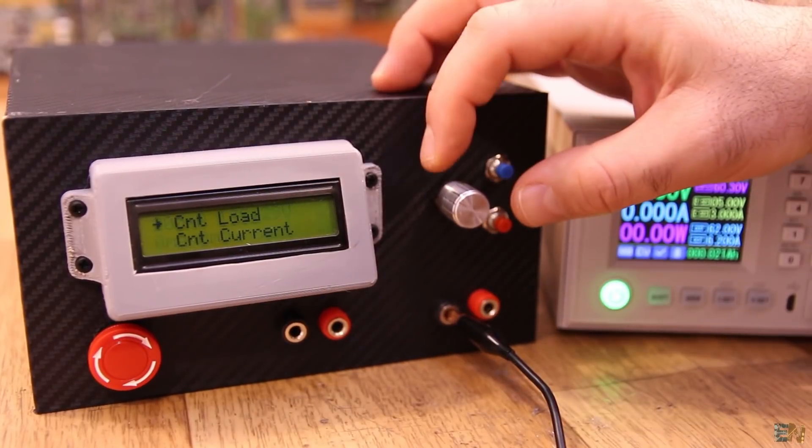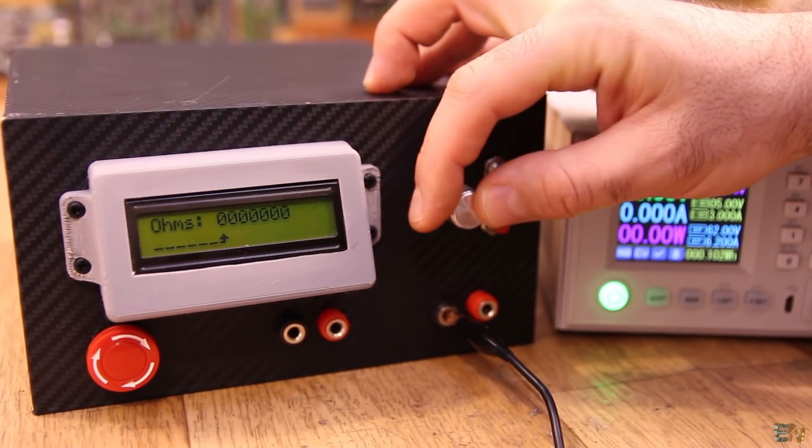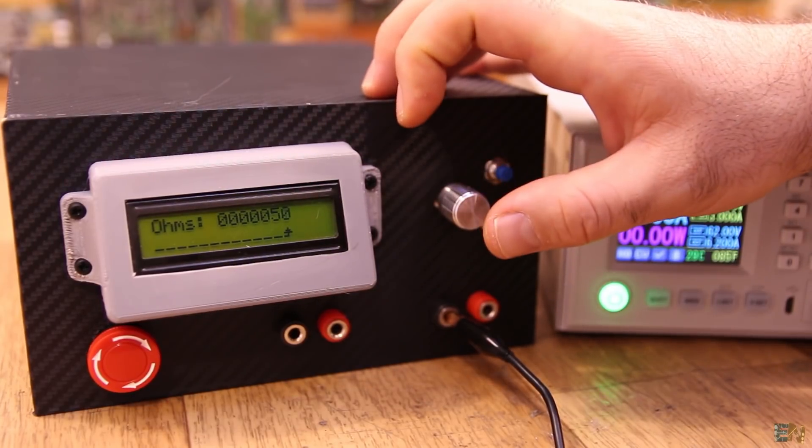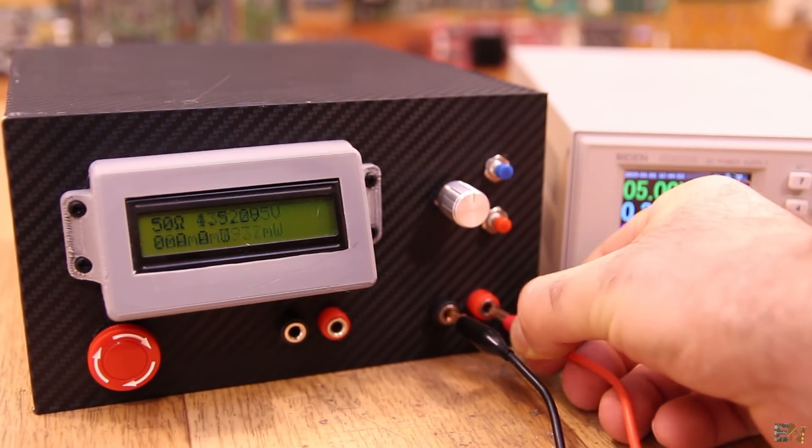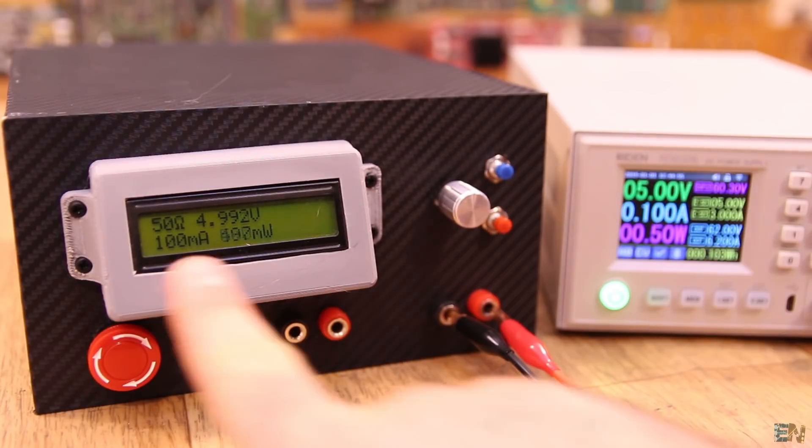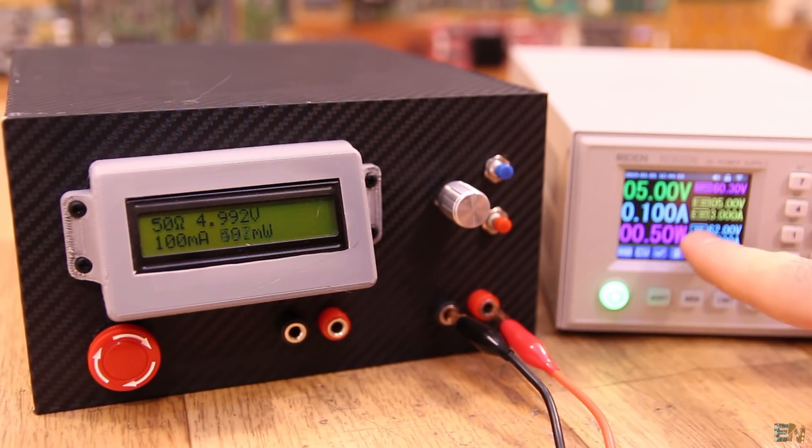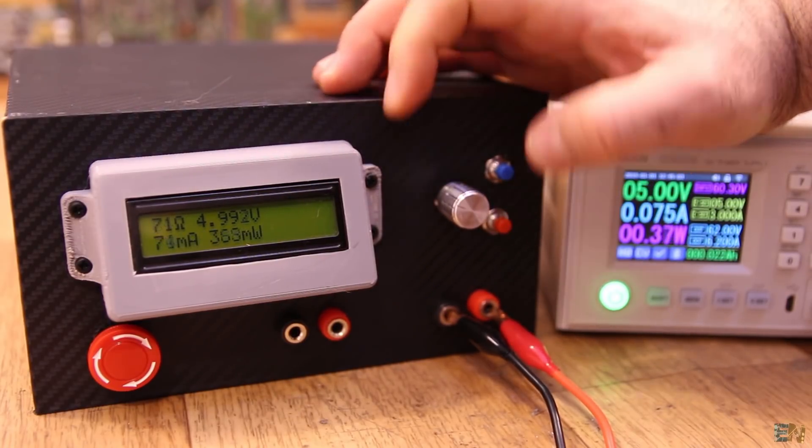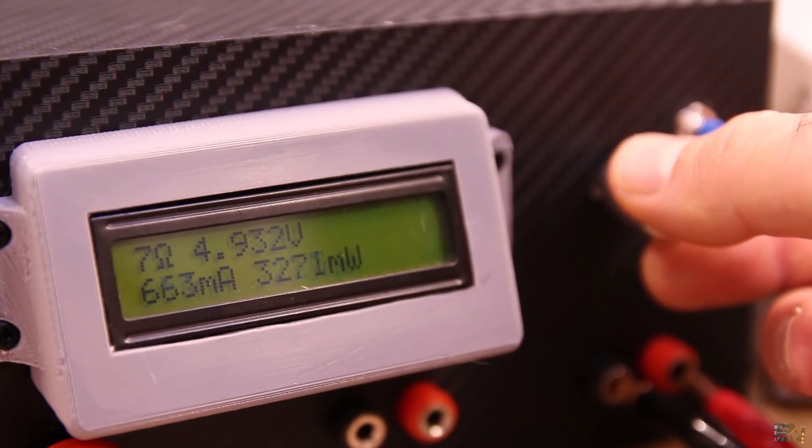Now push the blue button and now we go into constant load mode. I set the load to let's say 50 ohms. I connect the 5V supply and there you go. 100mA are now flowing to the electronic load of 50 ohms and we have the same value on my power supply. I can still increase or decrease the resistance value with the encoder and I can go down to just a couple of ohms.